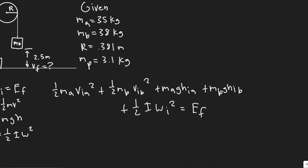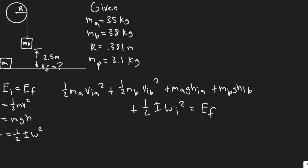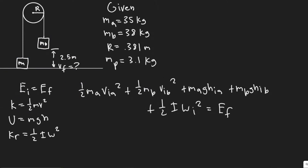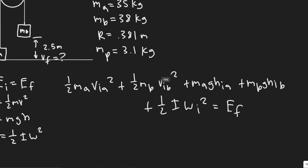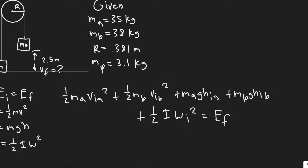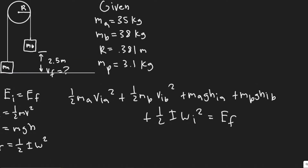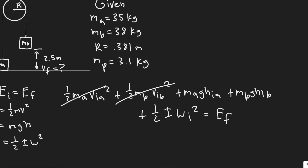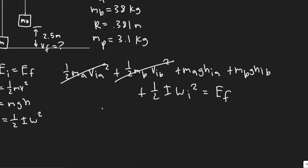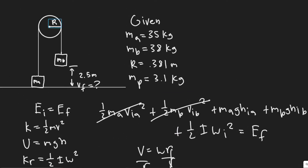Now we write the final energy. It equals one half MA V_final_A squared plus one half MB V_final_B squared plus MA×G×H_final_A plus MB×G×H_final_B plus one half I omega_final squared. The only term we can eliminate is the potential energy of block B, since right before it hits the ground its height is zero. So that term drops out, and this final expression equals the initial energy.